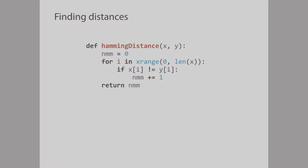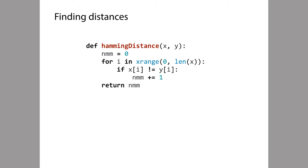If I give you two strings that are of the same length and ask you to find the Hamming distance between them, is that easy or hard? It's actually quite easy. You line up your strings x and y and go through position by position, comparing each position. In every case where the corresponding characters mismatch, you add one to a counter, and at the end you report back that counter.